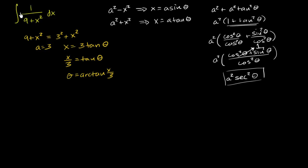Now we're also going to have to figure out what dx is. So let's take the derivative or we'll write it in differential form. dx is equal to 3, derivative of tangent theta with respect to theta is secant squared theta d theta.